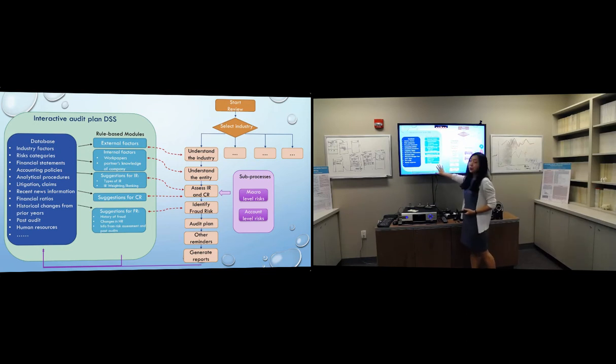This part is the role-based models that will provide some functions and suggestions to the auditors such as identifying external factors and company-specific factors, fraud risk factors, and also provide risk assessment rankings, and also the suggestions for the controls and for inherent risk.